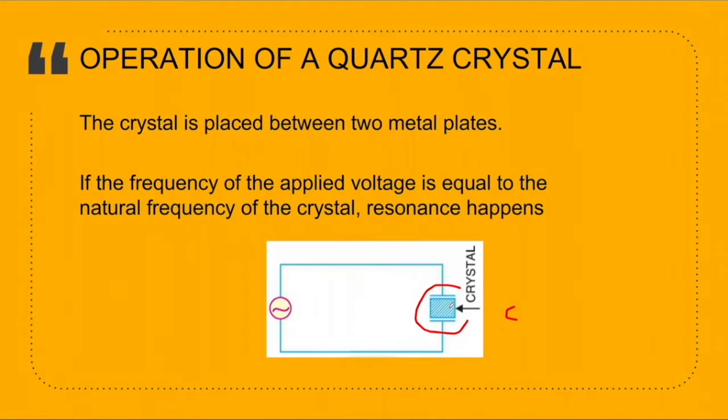If we introduce an AC voltage across the plates, the crystal will start vibrating at the frequency of the applied voltage. Now if the frequency of the voltage that we applied is equivalent to the natural frequency of the crystal, then resonance will take place.